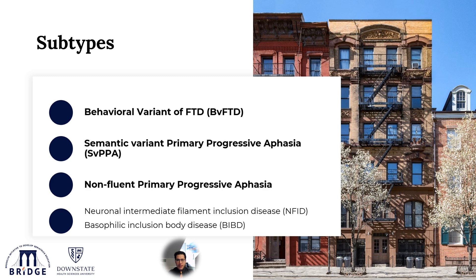There are several subtypes of frontotemporal dementia. The most common one is the behavioral variant of frontotemporal disease. Less common subtypes include the semantic variant of primary progressive aphasia and the non-fluent variant of primary progressive aphasia. Other much less common subtypes include the NFID and the BIPD.